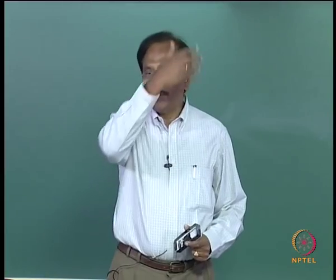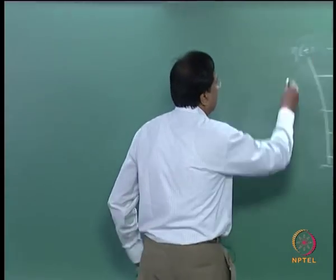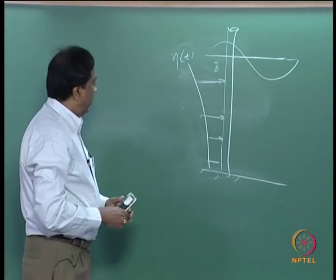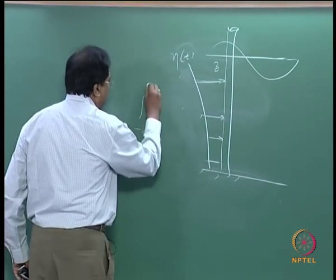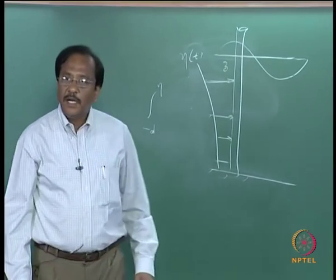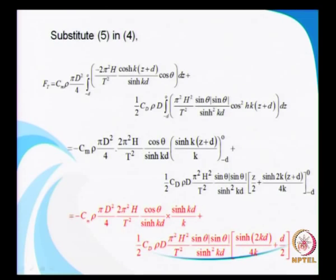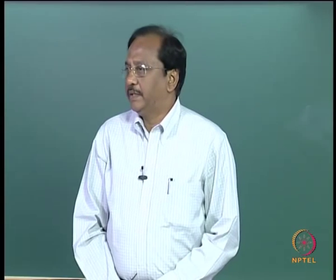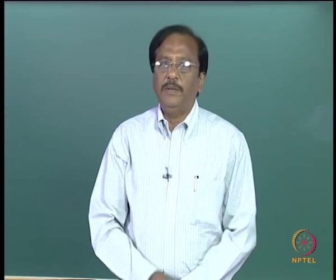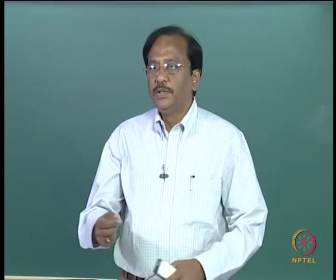If you want to consider the variation of eta, the integration will be from minus d to eta. Another form of first approximation considers instantaneous water depth — that is d plus eta — instead of d. It is a bit more complicated, but you are moving closer to reality.